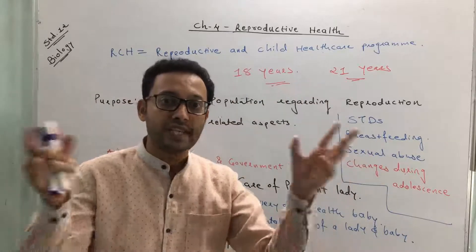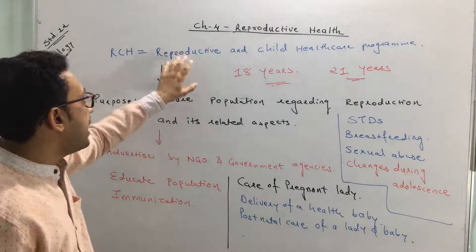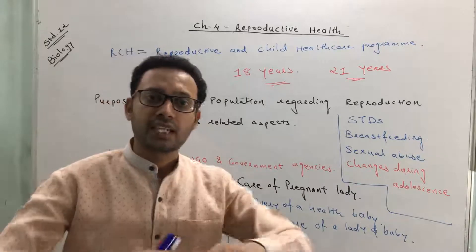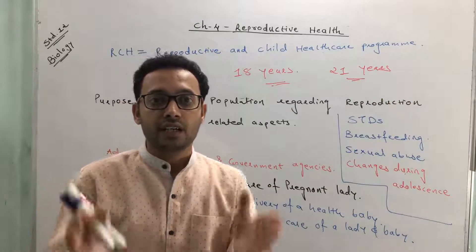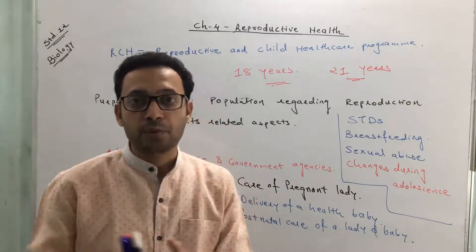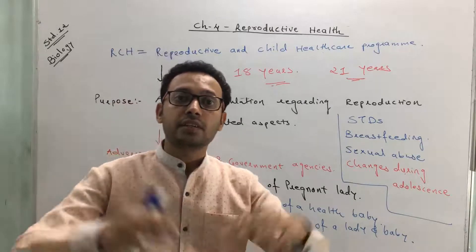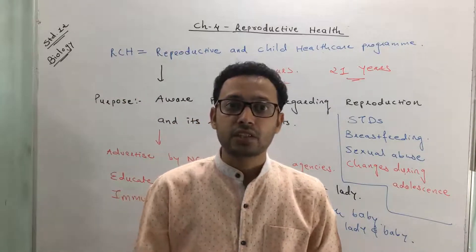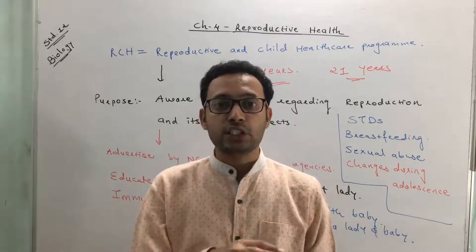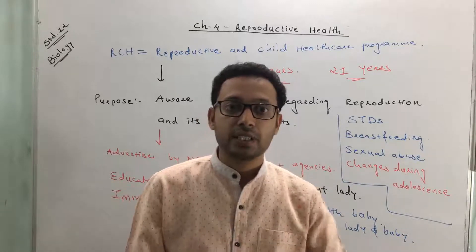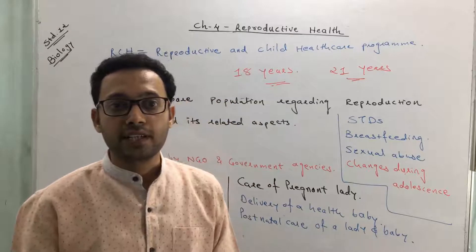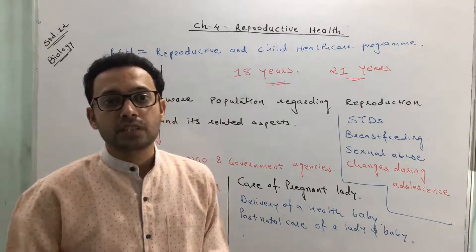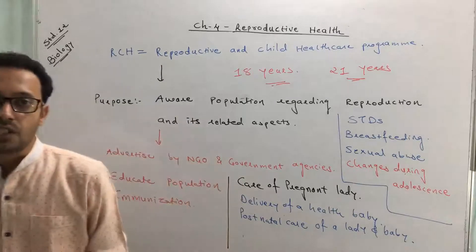These are the different aspects included under RCH — Reproductive and Child Healthcare Programs. It has a wider scope: not just restricting population numbers but also looking after all other aspects of reproduction, including physical, social, behavioral, and emotional aspects, along with child healthcare.